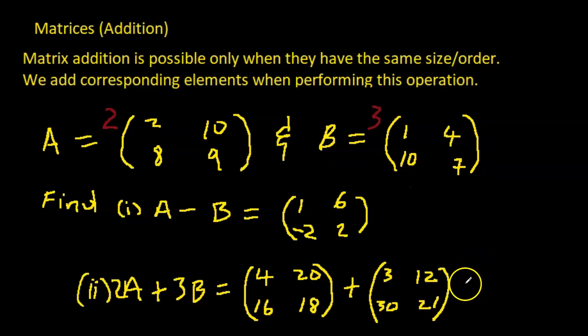Alright, so adding them now. So add the elements that correspond. 4 plus 3, that's 7. 20 plus 12, that's 32. 16 plus 30, that's 46. 18 plus 21, that's 39.